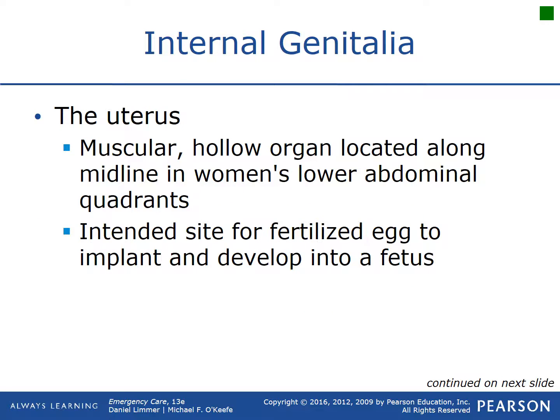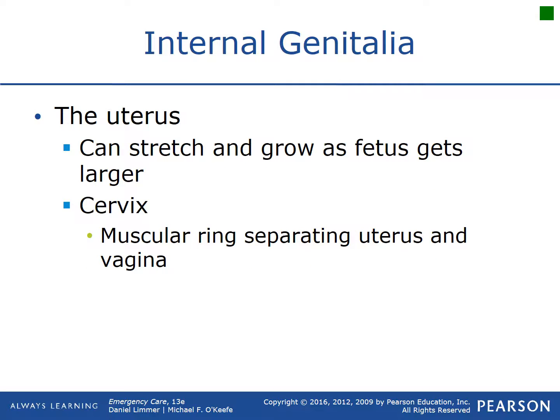The uterus is the hollow organ located midline in the woman's lower abdomen. This is where the fertilized egg is supposed to implant and develop into a fetus. The uterus stretches and grows as that fetus gets bigger, which is why the typical pregnant female's belly gets bigger.